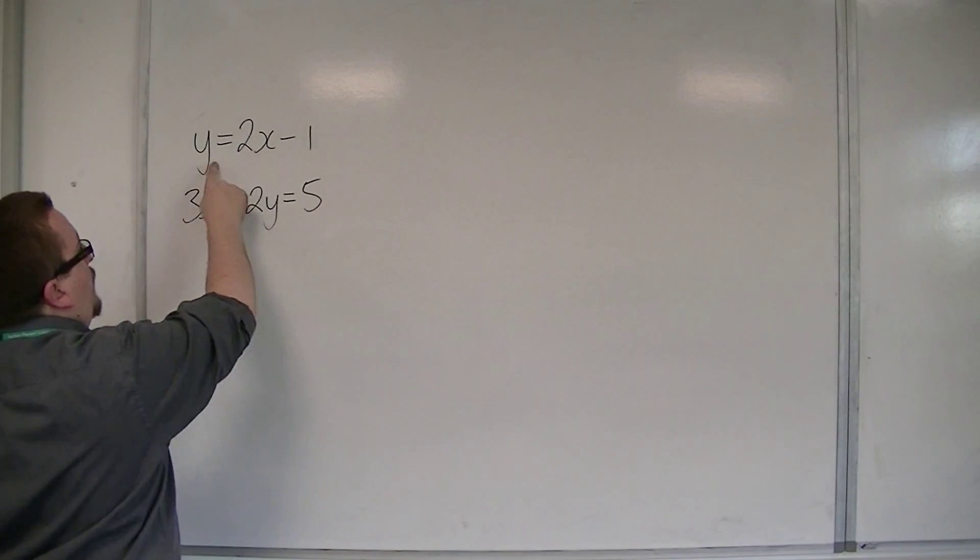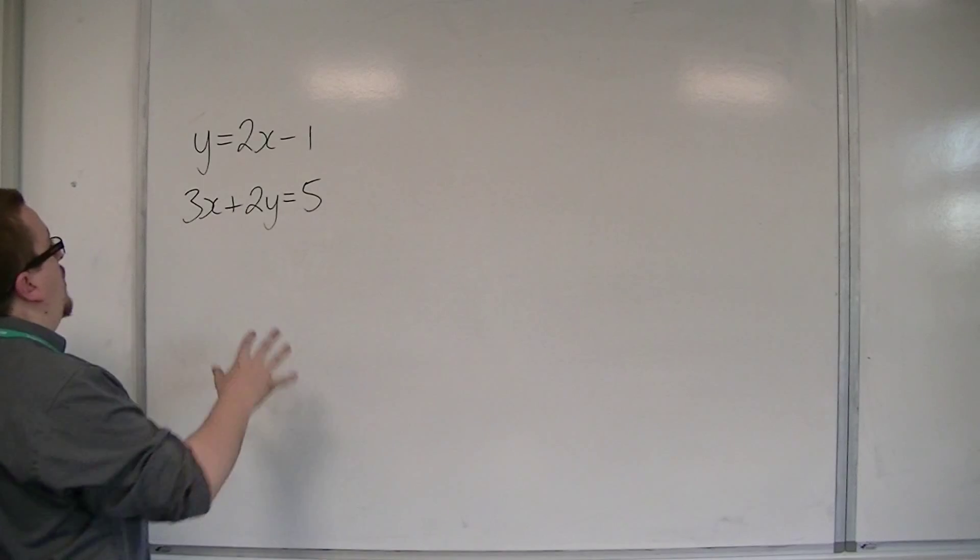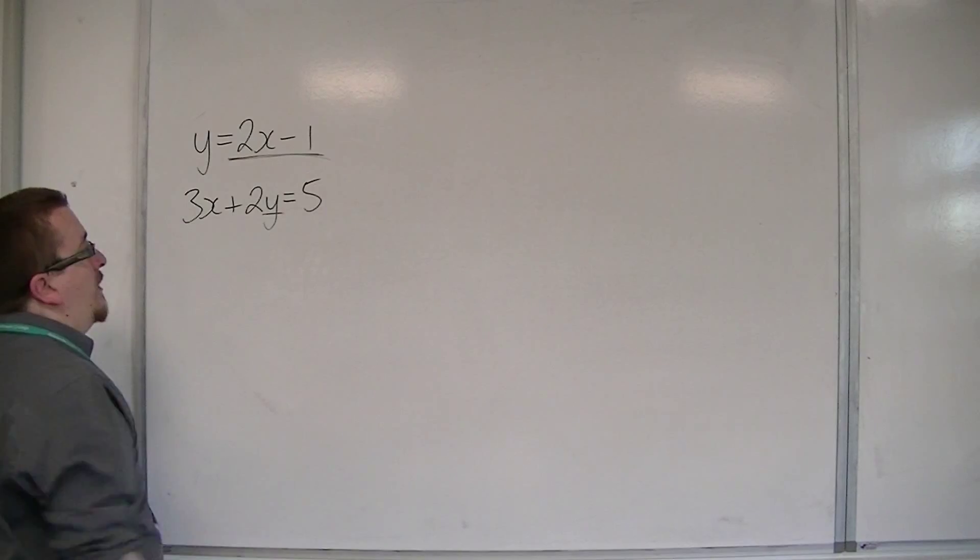these two y's must be the same thing if they are to intersect. So you can replace this y with this y, this 2x minus 1.